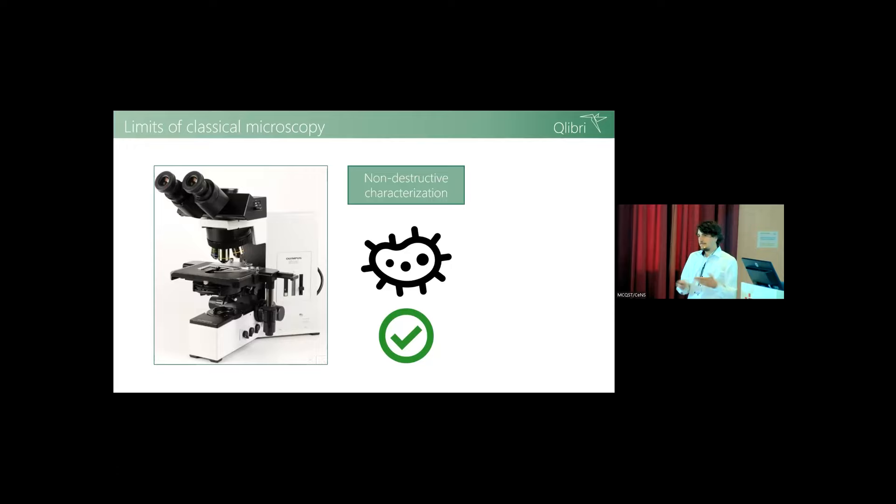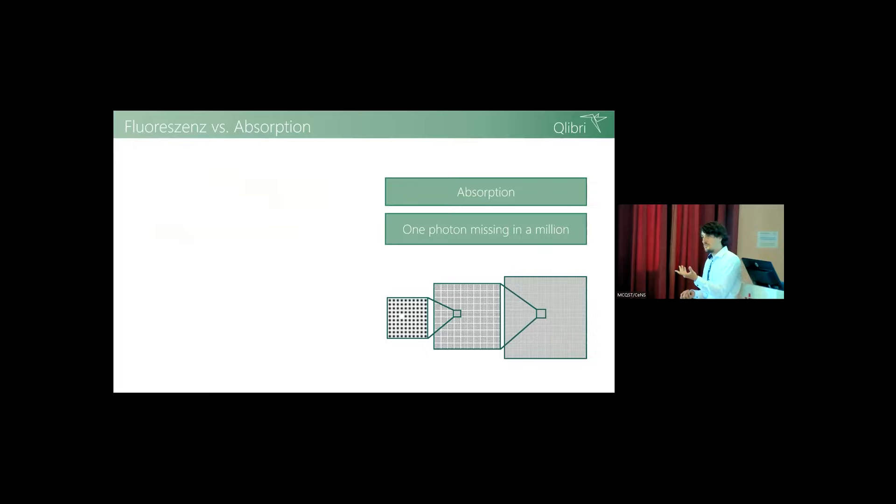Now the question is we're talking about nano, since light-matter interaction decreases when the particle size decreases. What happens if we're in the nanoscale regime? How well does this work? There's a brief introduction. You have two possibilities to look at light: detect emitted light or absorbed light, basically photons missing.